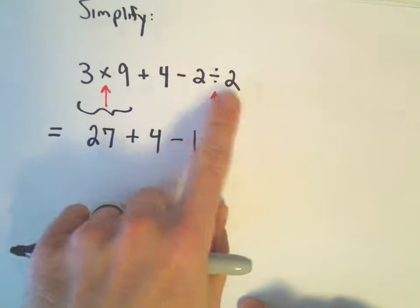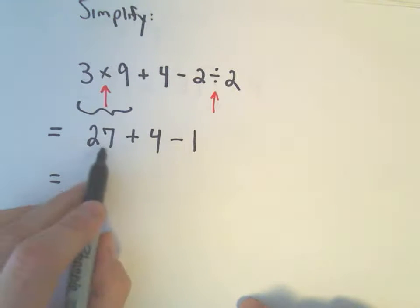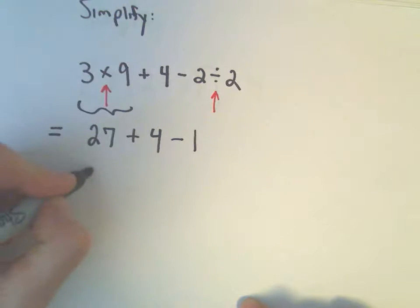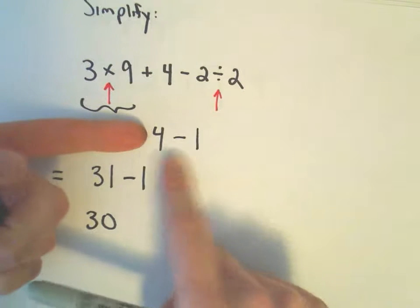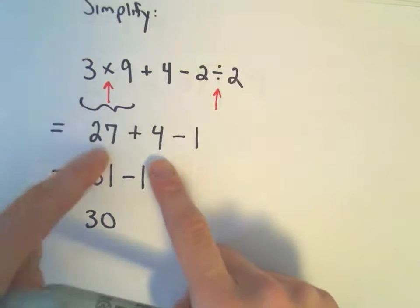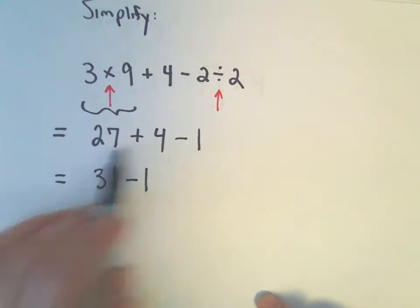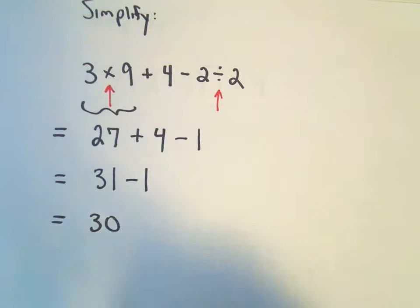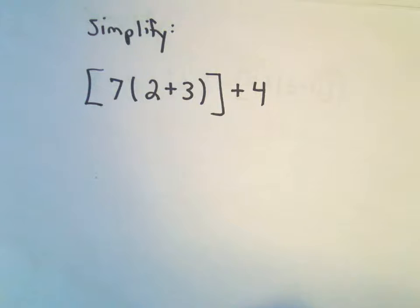And now all I have left is addition and subtraction. So you can just do these left to right. 27 plus 4 is 31, and then we subtract 1, and we get 30. Notice you could have done 4 minus 1 and had 3. 27 plus 3 would also give you 30. So addition and subtraction, it really doesn't matter if you do those left to right. You'll still get the same thing. But that's not the case with multiplication and division.